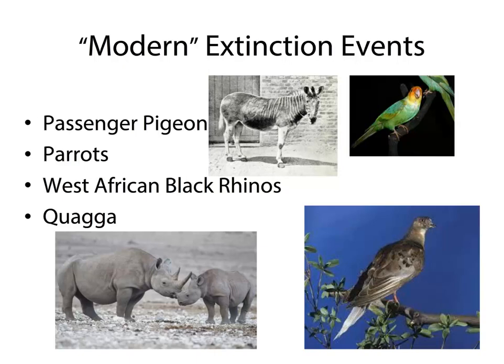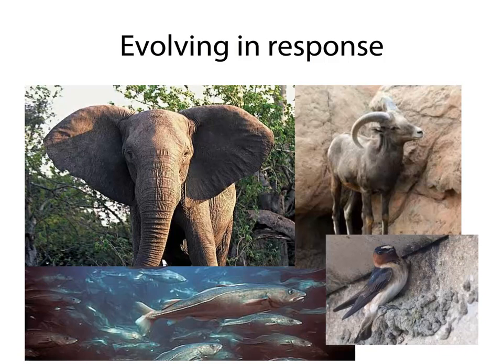There are many modern extinction events — within the last hundred years. The passenger pigeon is one story. Believe it or not, we used to have parrots in North America — the Carolina parakeet — which became extinct because they were overhunted for their brightly colored feathers for ladies' hats in the early 1800s and 1920s. The West African black rhinos are down to dangerous levels. The quaggas, which look like a cross between a zebra and a horse, were their own distinct species and went extinct with humans being around.